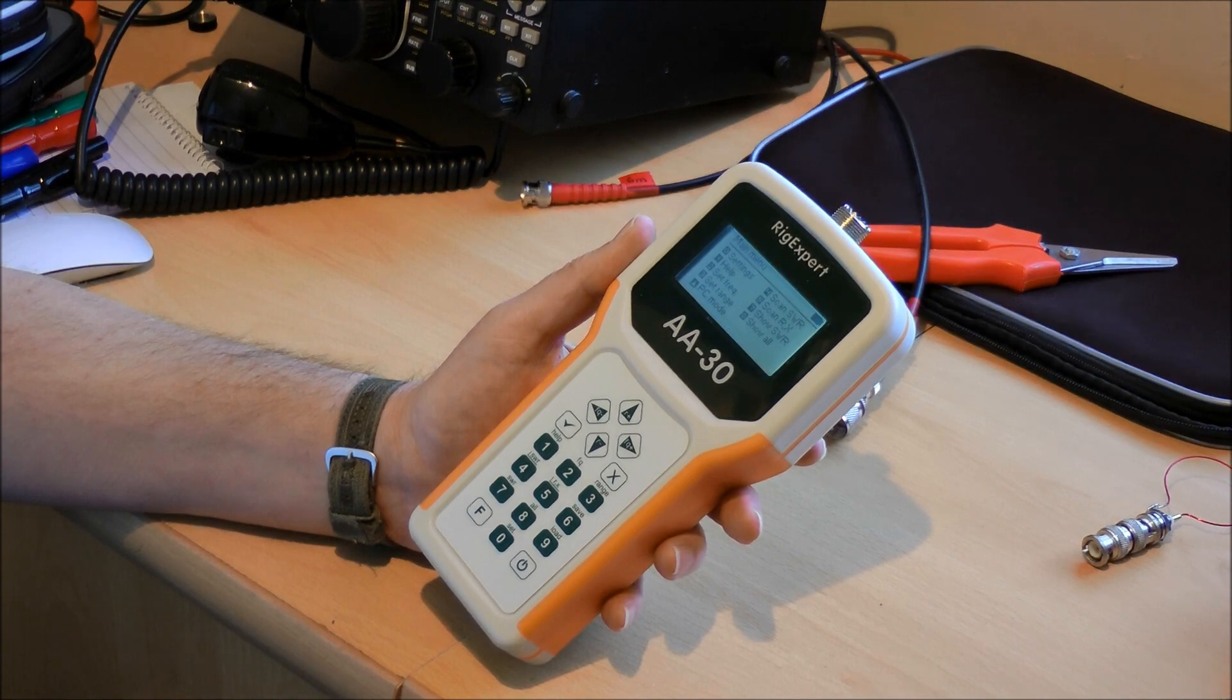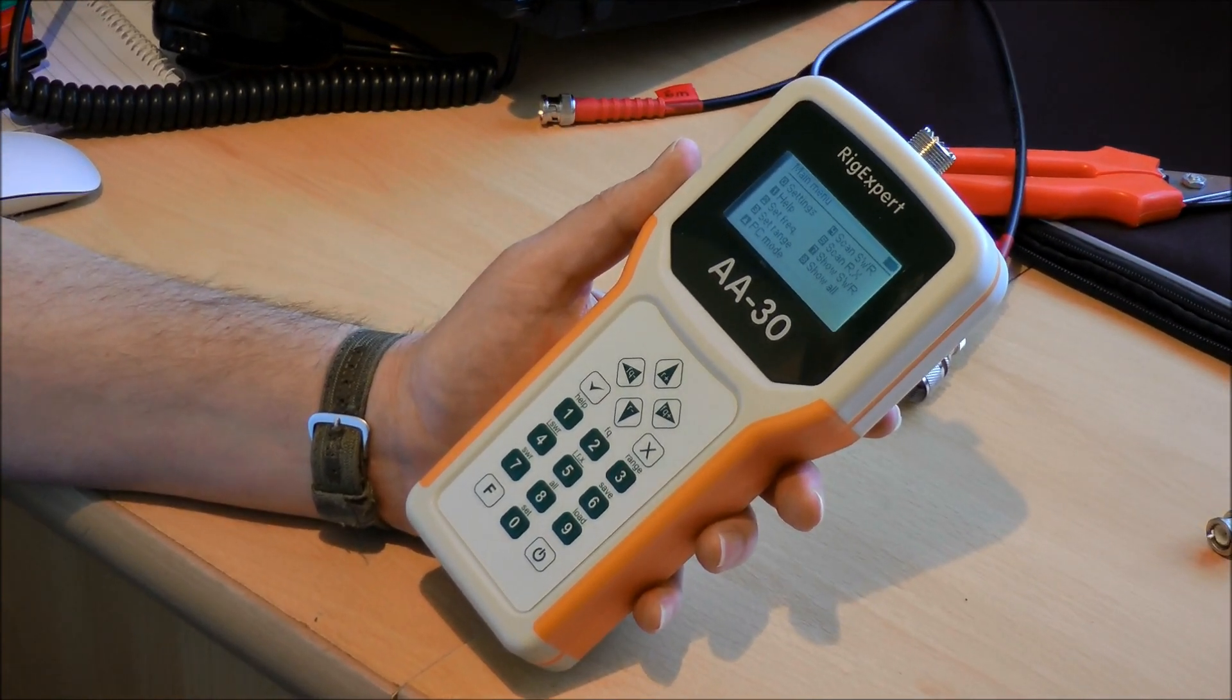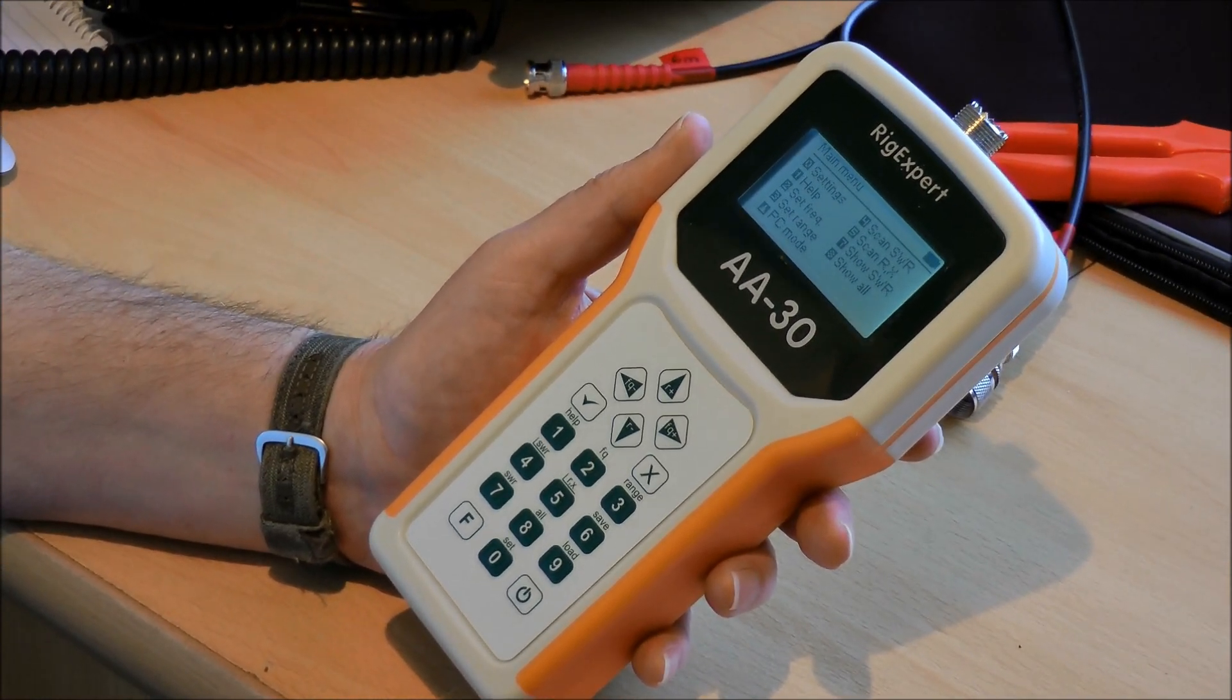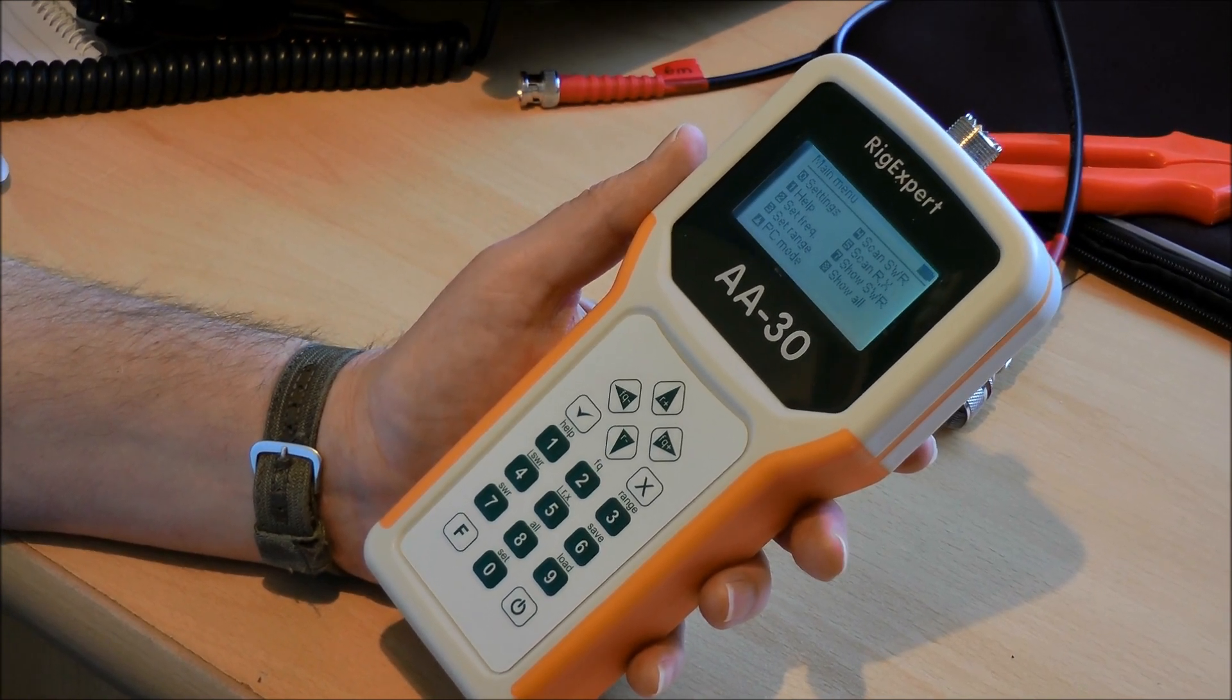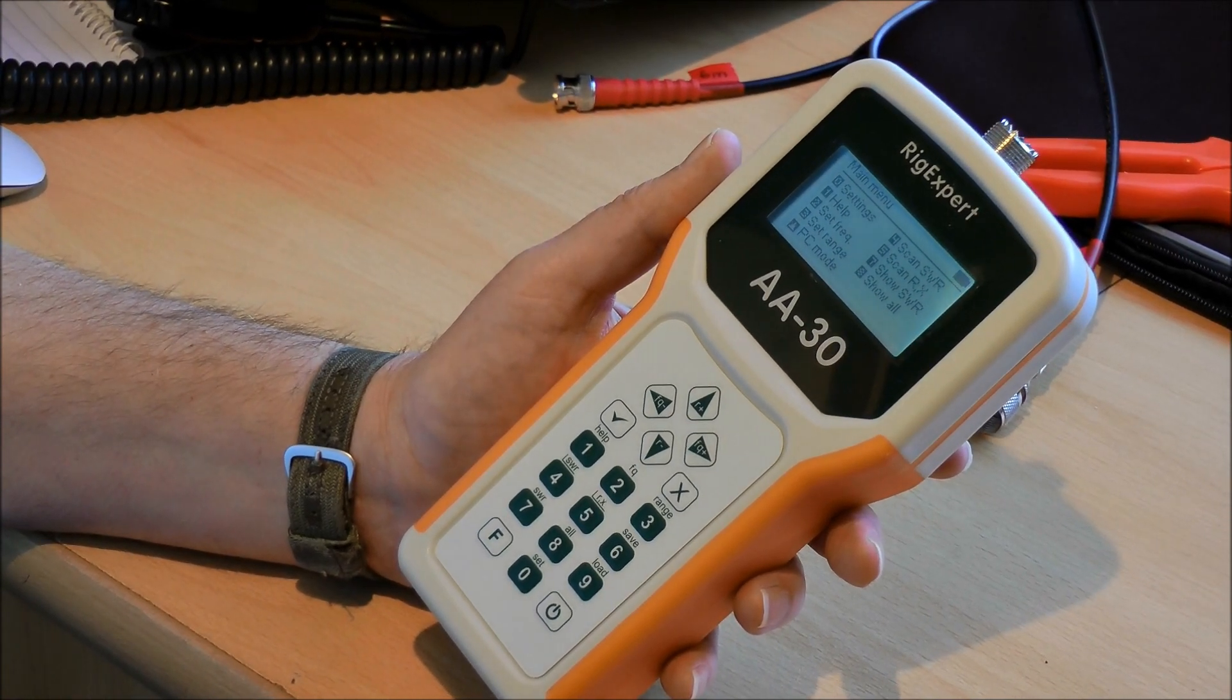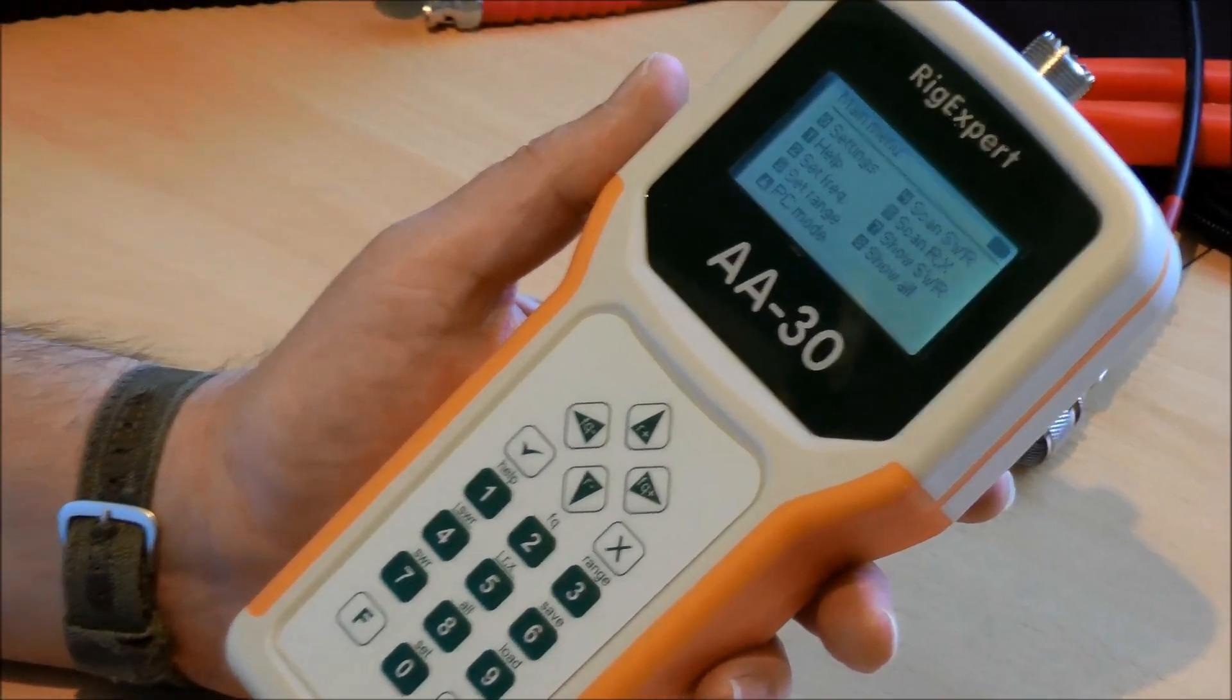What I want to do today is show you a few things like measuring the SWR of an antenna, how to cut a quarter wave stub, and maybe have a look at the resonance of a trap. We'll start off with the analyzer itself. This version runs on two AA batteries.